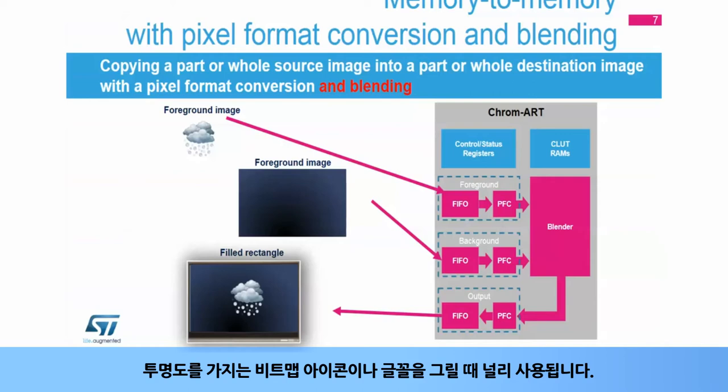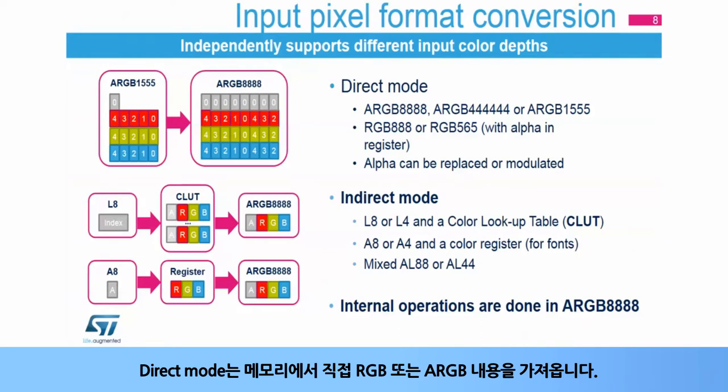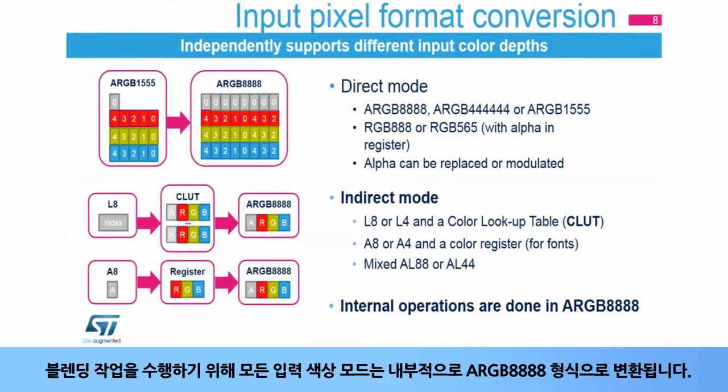This is widely used to draw bitmap icons having transparency or fonts. For each foreground and background layer, the format can be programmed independently. Direct mode fetches the RGB or ARGB content directly from the memory. Indirect mode uses an intermediate color lookup table to determine the color to be used during the copy or blending operation. All input color modes are transformed internally into ARGB 8888 format to perform the blending operation.